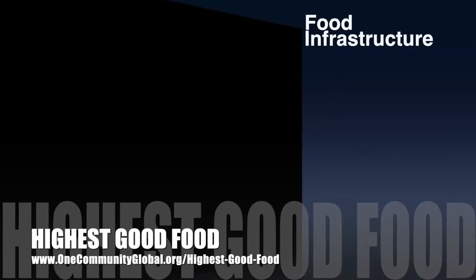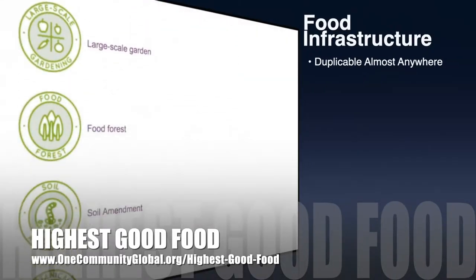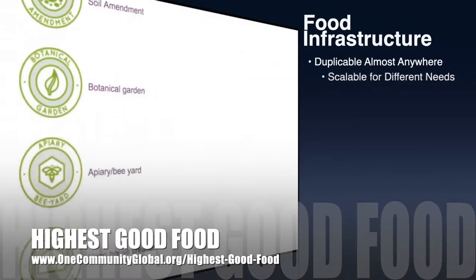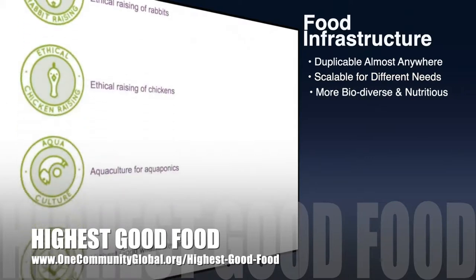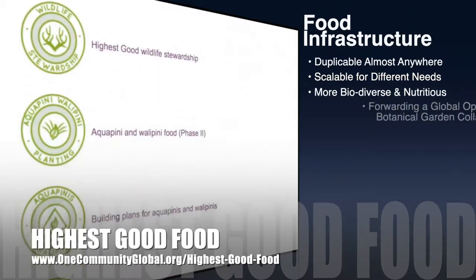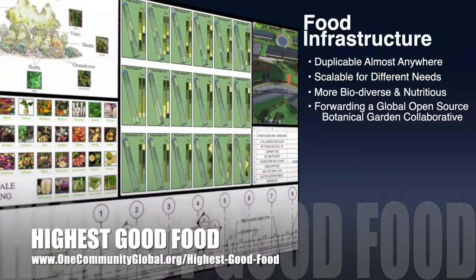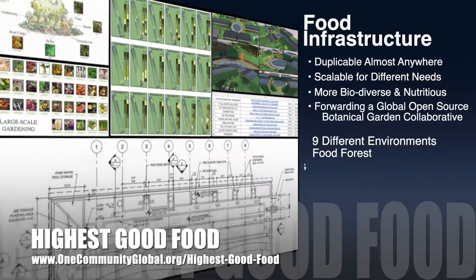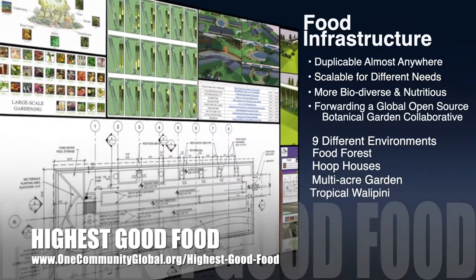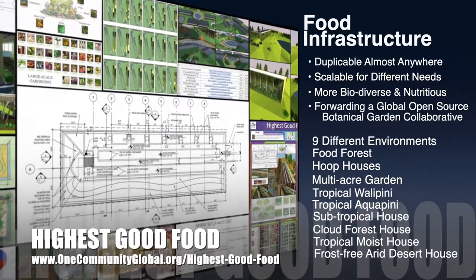One Community's approach to highest good food is duplicable almost anywhere, scalable for different needs, more biodiverse and nutritious, part of forwarding a global open source botanical garden collaborative, and includes nine different free shared and duplicable growing environments.